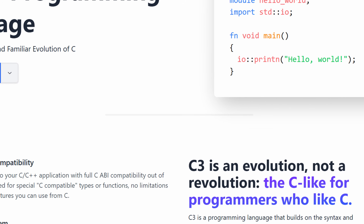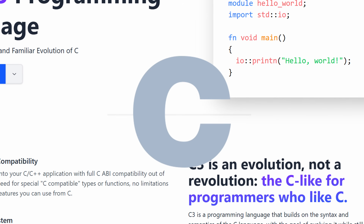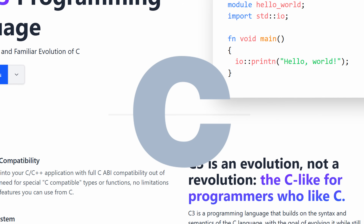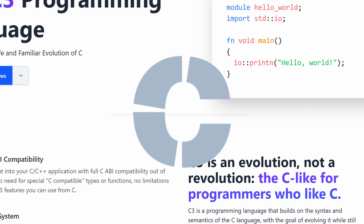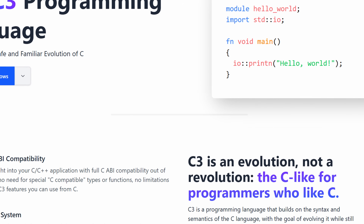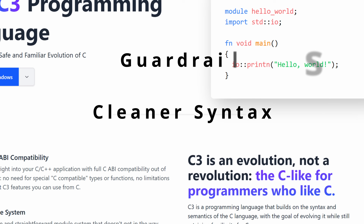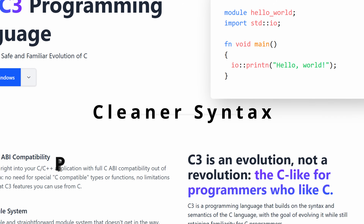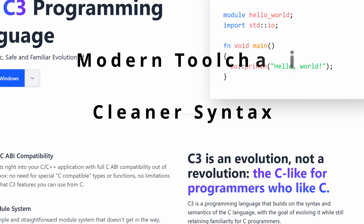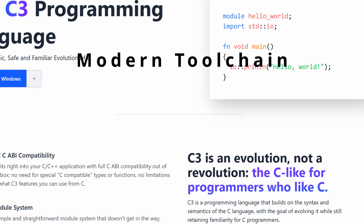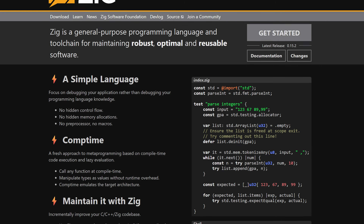C3 tries to look and feel like C, just improved from its perspective: cleaner syntax, guardrails where it matters, predictable behavior, and a toolchain that feels like modern software development instead of something from the late 80s.